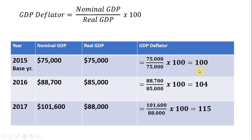In 2016, we have nominal GDP coming in at $88,700 and real GDP at $85,000. So once again, nominal GDP divided by real GDP multiplied by 100 — with a little rounding, we get 104 for the GDP deflator.